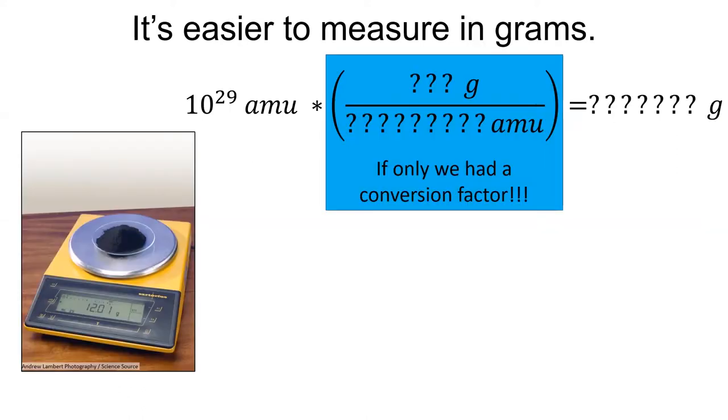When chemists have to measure the mass of real world objects, we prefer to use the mighty gram. However, since atoms are measured in atomic mass units, we'd need some sort of conversion factor to go between atomic mass units to grams.